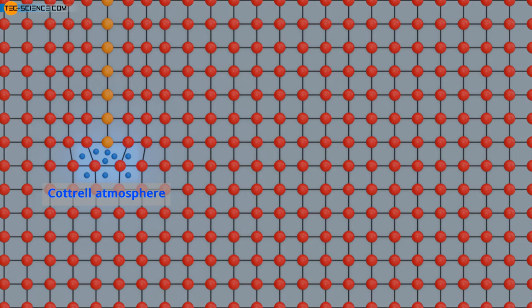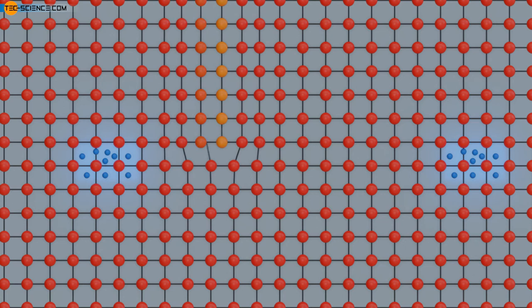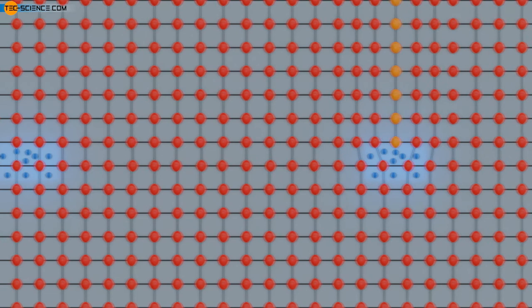These foreign atoms first prevent the dislocations from moving due to their electrostatic forces. This is also referred to as pinning of dislocations. Only at a certain stress, the dislocations can break away from the foreign atoms and the plastic deformation process suddenly begins.